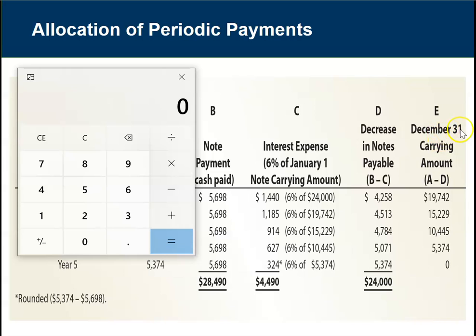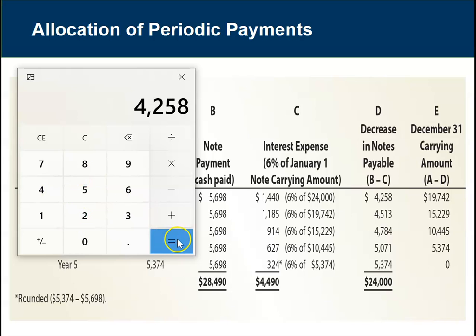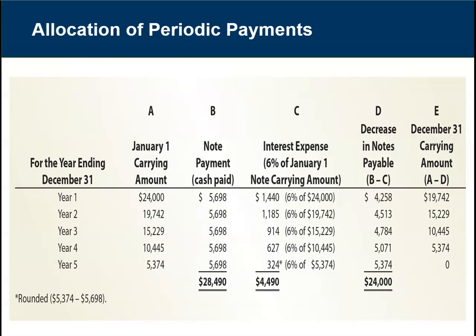At the end of year 1, December 31st, our carrying amount is $19,742. We started off owing $24,000, and if we paid off principal of $4,258, at the end of the year we would owe $19,742. The carrying amount goes gradually down until we finish paying off the note in year 5. We're going to look at amortization schedules a lot more in our discussion of bonds in the next chapter.